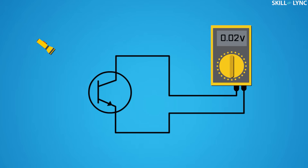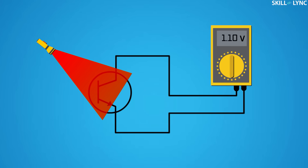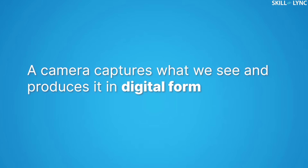Shown here is the symbol of a photo transistor. In the absence of light, a small current flows from the collector to the emitter. When light falls on the base, it leads to the generation of charge carriers. Photo transistors convert light energy into electrical energy — depending on the intensity of light falling on the base terminal, the same amount will be converted into current.